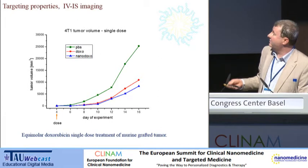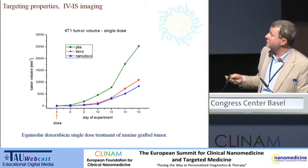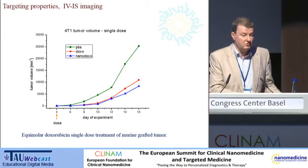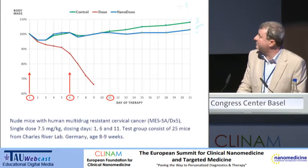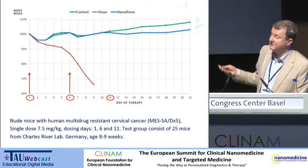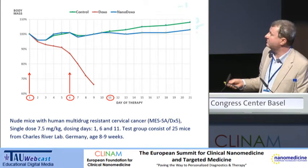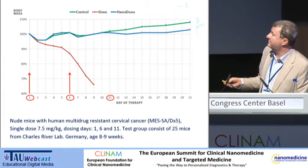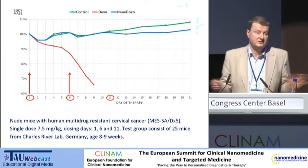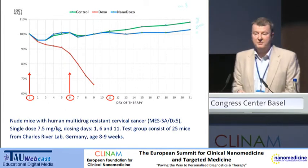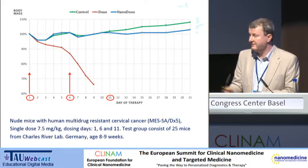We also observed the tumor size. When we administer an equimolar dose as a single administration, we see that it works, but there is not a big difference between pure doxorubicin and doxorubicin inside nanoparticles. Where you can really see the big difference is the body weight of the mouse. With a triple administration of pure doxorubicin, the animals just die. In the case of doxorubicin encapsulated in nanoparticles, you cannot really see the side effect. So I think that's the way to go.